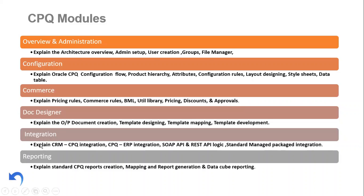Next is the Integrations module. We discussed earlier how data flows from upstream to downstream. Here we'll explain technically how this integration happens, specifically the setup used for CRM-to-CPQ integration as the upstream, and how data can be migrated to the downstream system. The techniques covered will include REST API, SOAP, and standard managed package installations — all of this will be discussed in depth.